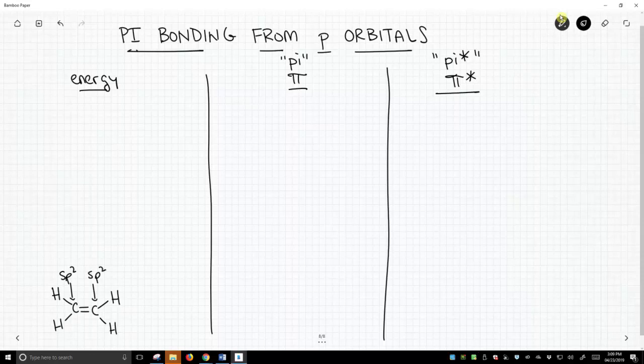Let's think about what this means. When something's sp2 hybridized, we take the s and the three p's. We mix them all together. We get three new sp2 hybrid atomic orbitals plus the leftover p.